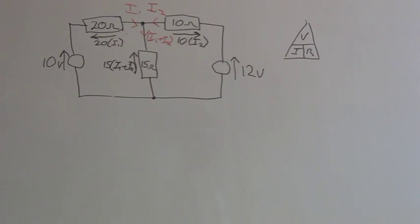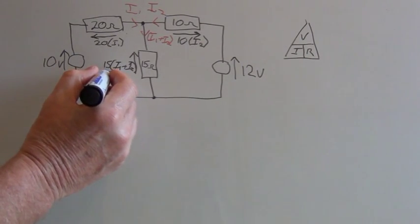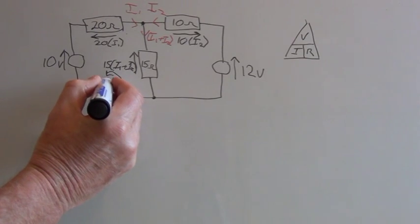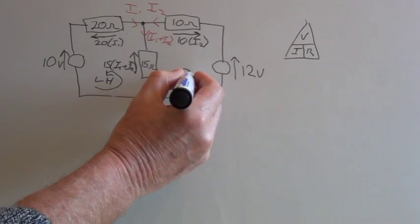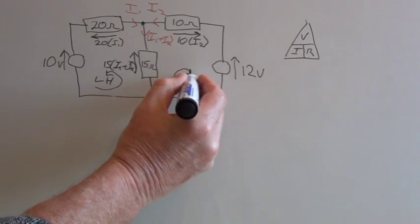Now we need to find the values of I1 and I2. To do this, we use a technique called simultaneous equations. To formulate the equations, we use Kirchhoff's second law, which states that the sum of voltages around a loop must be equal to zero. As we can see from our diagram, we have a left hand loop and a right hand loop.